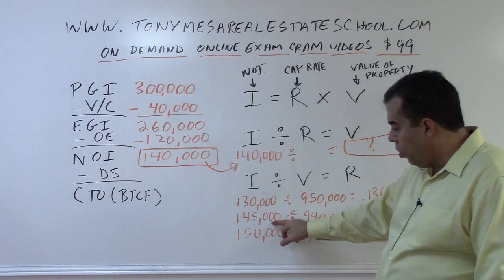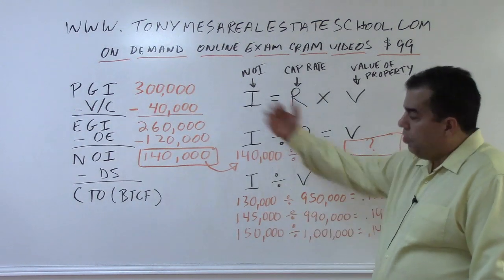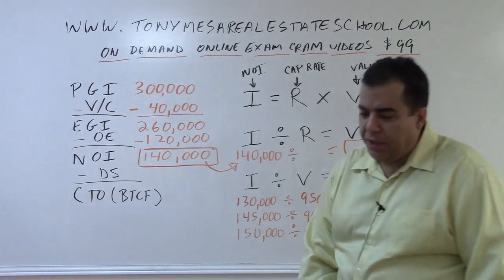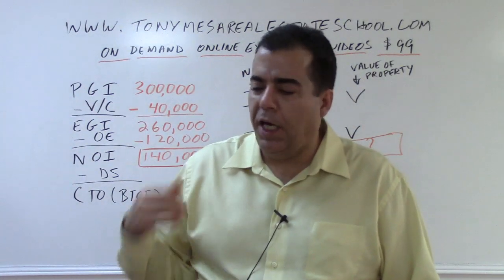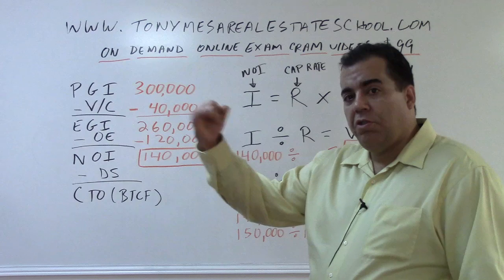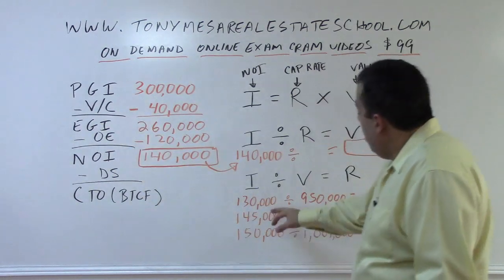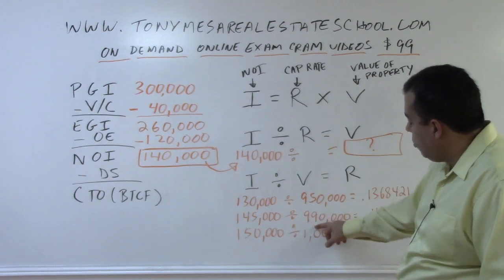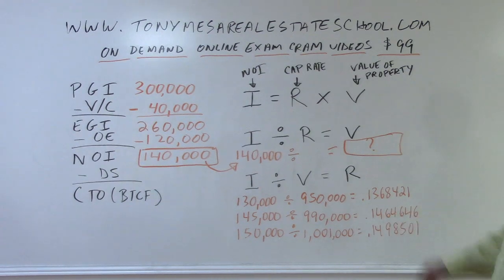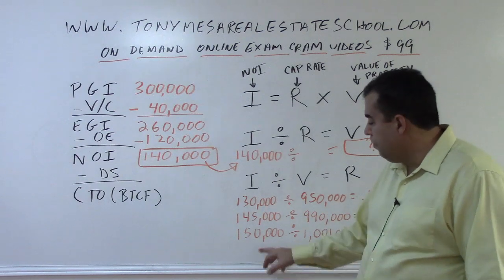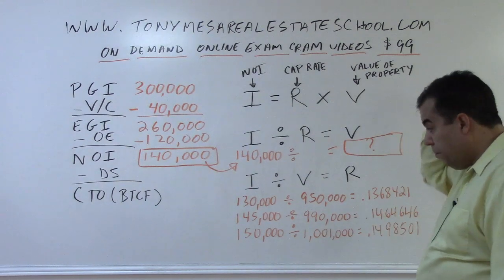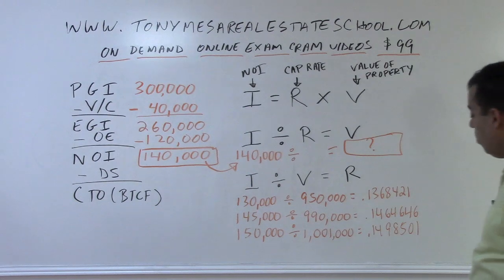Property number two sold — again, these are properties the appraiser picked because they're substantially similar to the subject, in the same marketplace, and are fairly recent sales. If the subject is an office building, the appraiser won't pick a strip center or apartment building as a comparable. Properties are similar, sold recently, and geographically close. Property number two had an NOI of $145,000 and sold for $990,000, giving a cap rate of 0.1464646. Property number three had an NOI of $150,000 and sold for $1,100,000, giving a cap rate of 0.1498501.